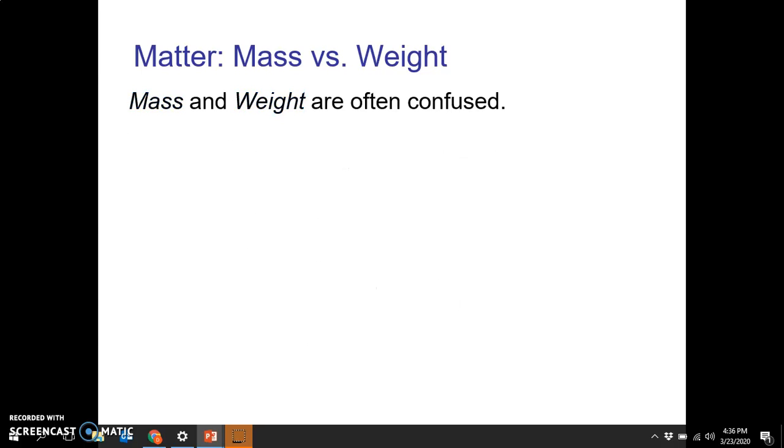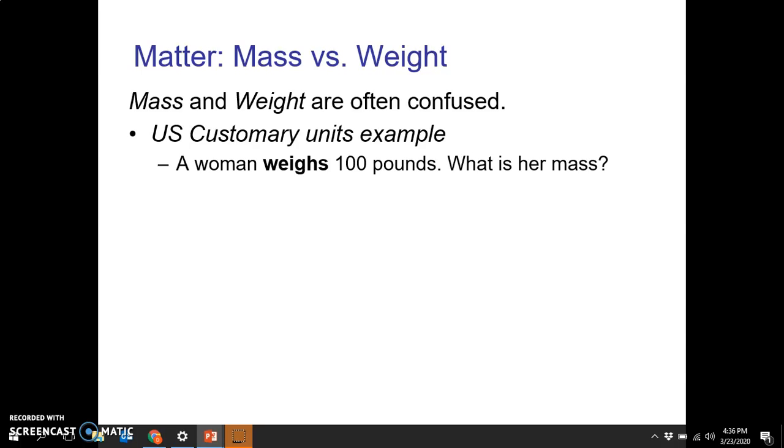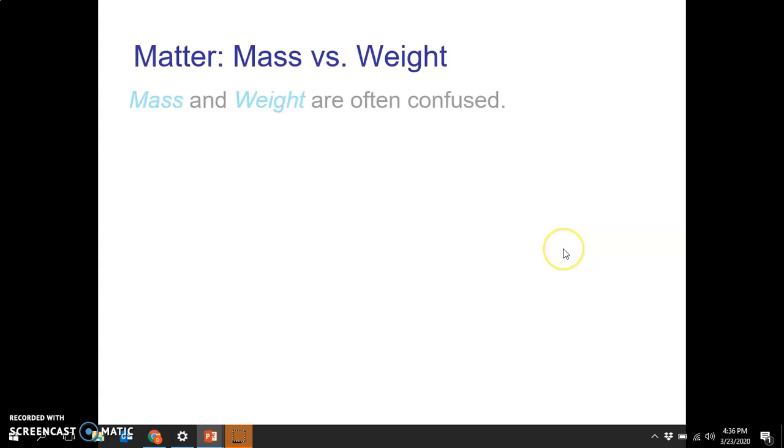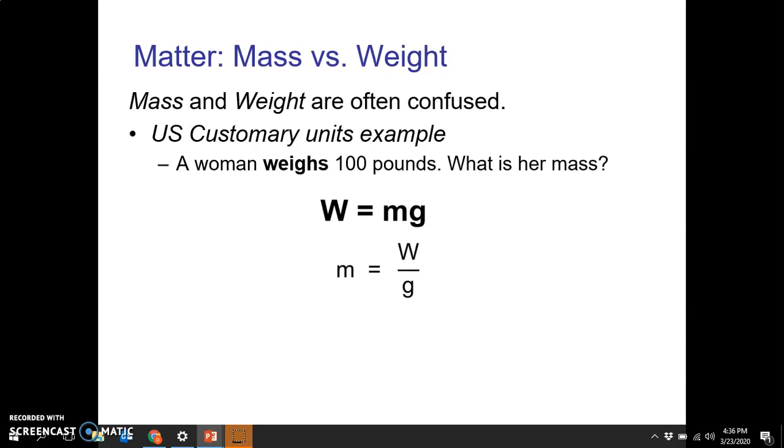Let's do another example. A woman weighs 100 pounds. What is her mass? Mass is measured in slugs in English. We have now the W. We know that W equals M times G. We know what G is. That's 32.2 from this chart. We can quickly do a simple algebra problem. If I rearrange this to get M by itself, I'll divide both sides by G. I plug in 100 for the weight, because that's the force, and I divide by 32.2, and I get 3.1 slugs. So her mass is 3.1 slugs.